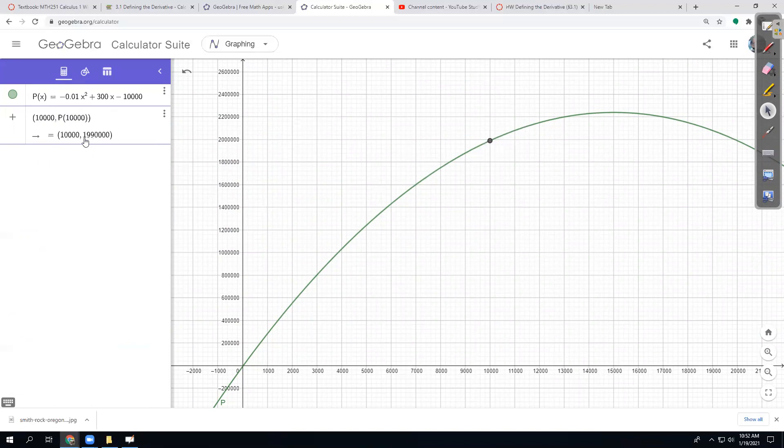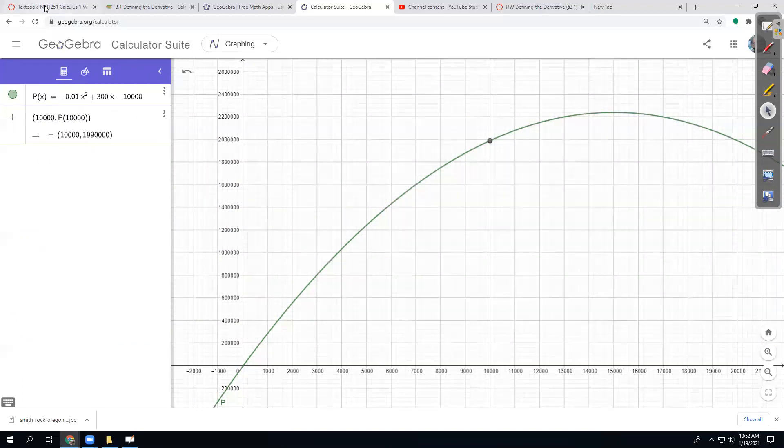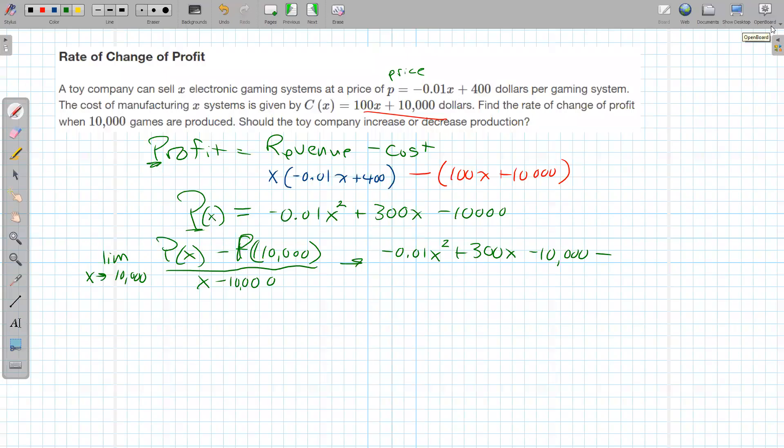So what do we have here? One, nine, nine, and then one, two, three, four is the zeros. So at that instant, we have a profit of 1,990,000 according to this. And we have to divide by x minus 10,000. So we've got to clean this up a bit.